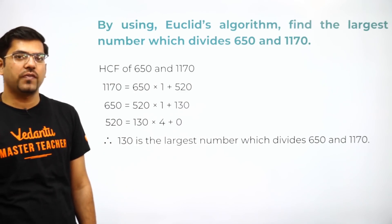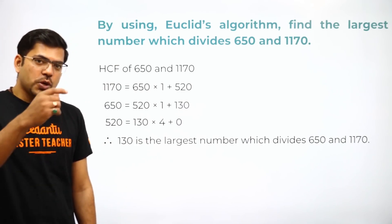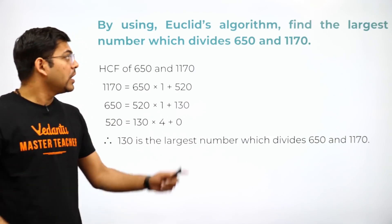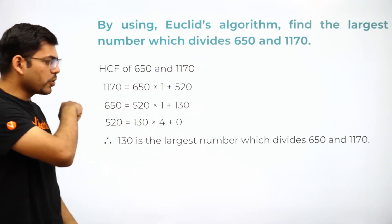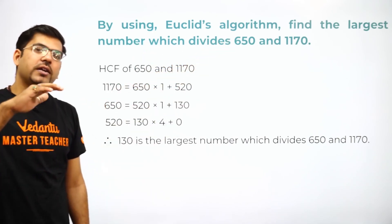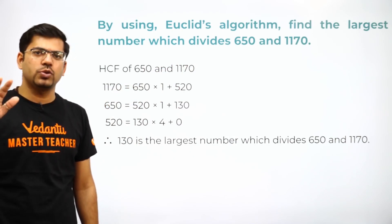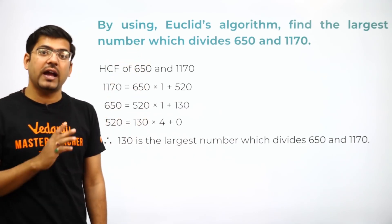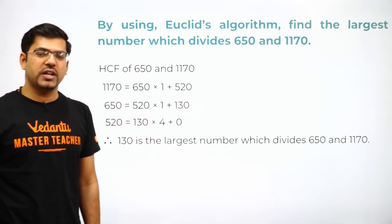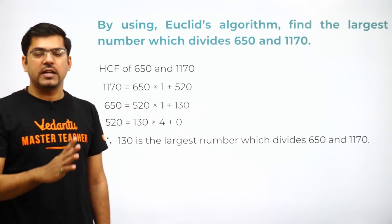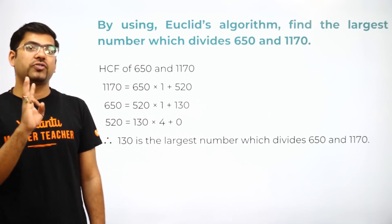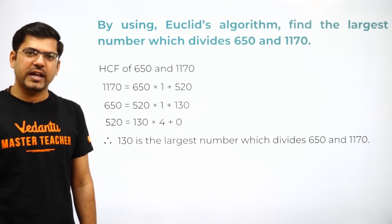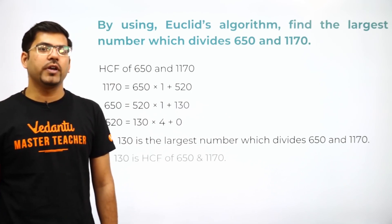So 130 is the largest number which can divide both 650 and 1170. Since the question says Euclid's division algorithm, you should write out these algorithm steps. The first portion can be done in rough, but I suggest writing it in the fair copy. This question has a lower probability of being a 4-marker but a good probability of being a 2-marker or 3-marker.